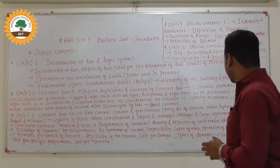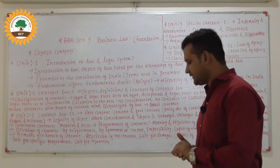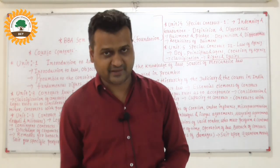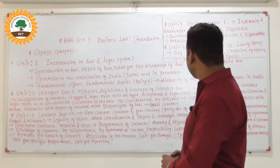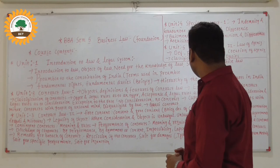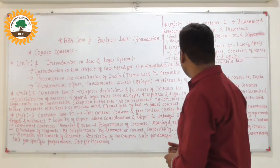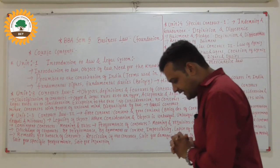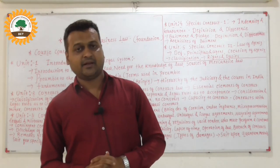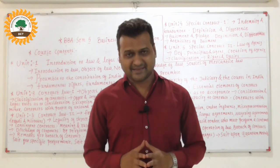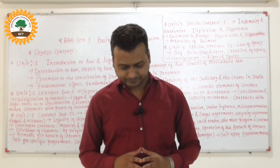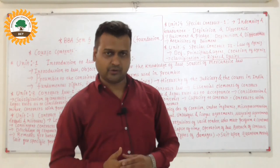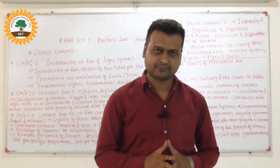Unit 5 is all about Special Contracts 2 — the law of agency. That includes: what is agency, what is an agent, what are the duties of an agent, the definition of principal and agent, how you can create an agency, and the rights and duties of agents and principals. So this is all about the syllabus of BBA semester 5 Business Law. Further, we will start from the first unit of law. Thank you.